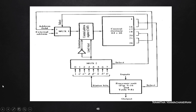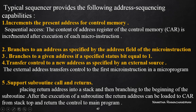The sequencer can perform or generate the address by incrementing the current content of the control address register by one. The control address register holds the address of the next micro instruction to be fetched from the control memory. In the case of sequential execution of instructions, we can generate the address of the next instruction simply by incrementing the current address value in this control address register by one.